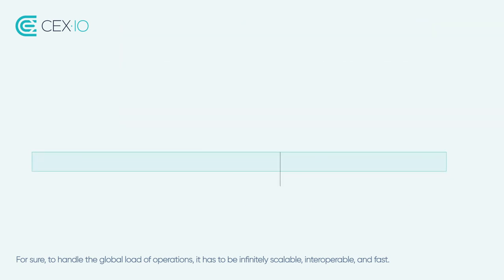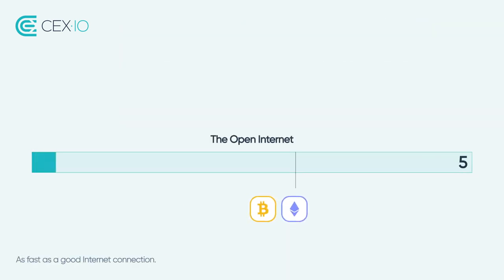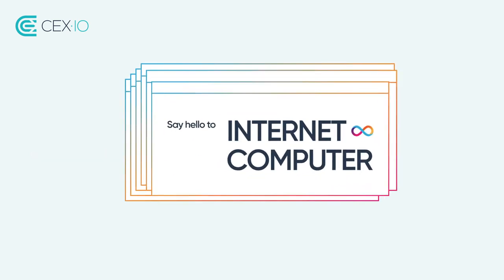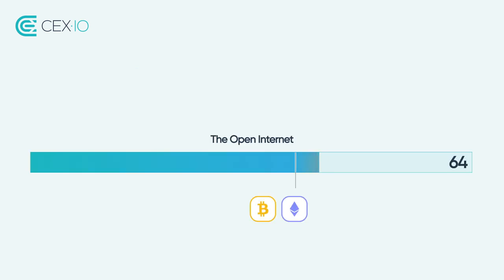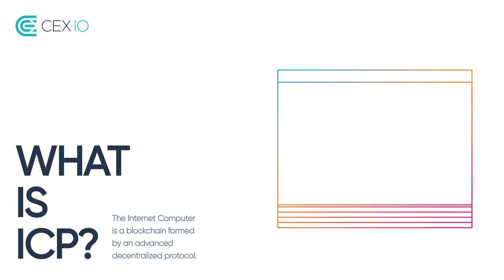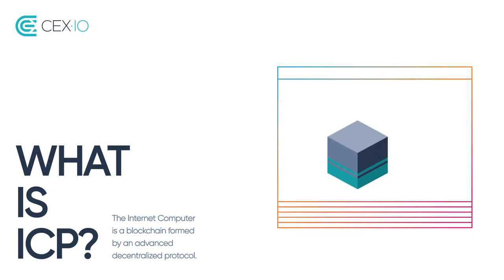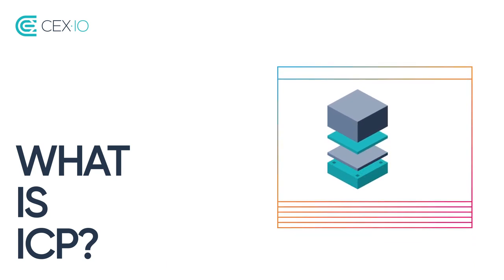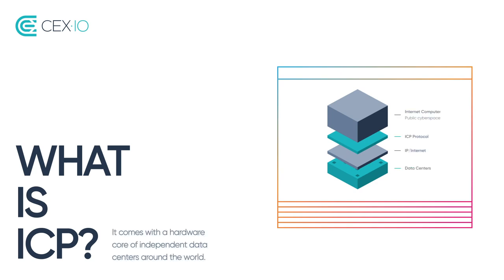To handle the global load of operations, it has to be infinitely scalable, interoperable and fast — as fast as a good internet connection. That's where the Internet Computer by DFINITY comes in. The Internet Computer is a blockchain formed by an advanced decentralized protocol. It comes with a hardware core of independent data centers around the world.